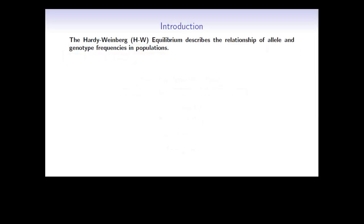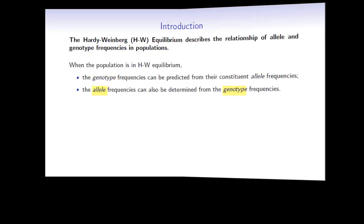This video is about the Hardy-Weinberg Equilibrium, which describes the relationship of allele and genotype frequencies in populations. When the population is in Hardy-Weinberg Equilibrium, the genotype frequencies can be predicted from their constituent allele frequencies, but also the other way around.